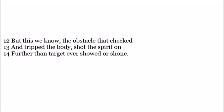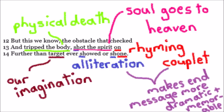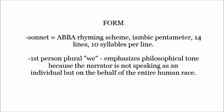The final three lines read: 'But this we know, the obstacle that checked and tripped the body shot the spirit on further than target ever showed or shone.' These lines offer a more peaceful conclusion, ending with a rhyming couplet and alliteration to emphasize this alternative message. 'Tripped the body' refers to physical death — the message being that death is when we leave the body behind and as a spirit go on to heaven, further than those back on earth can imagine. The target represents the imagination of mortals still on earth. There's a striking image of a person falling to death, the earth stopping the fall of their body while propelling their spirit into heaven.